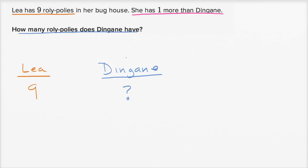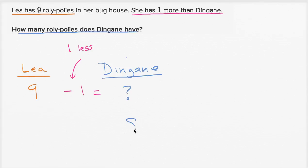So how do we write one less? We could just subtract one. This right over here is one less — this is saying that Dingane has one less than Leah. So how much does Dingane have? He's going to have eight roly-polies.